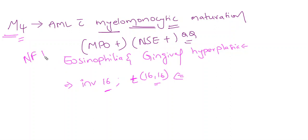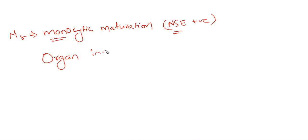Coming to M5, it is monocytic maturation, AML with monocytic maturation. It will be only NSE positive as monocyte is NSE positive. The more important thing here is organ infiltration or tissue infiltration is seen. Here also we will see gingival hyperplasia and it is associated with Sweet syndrome.